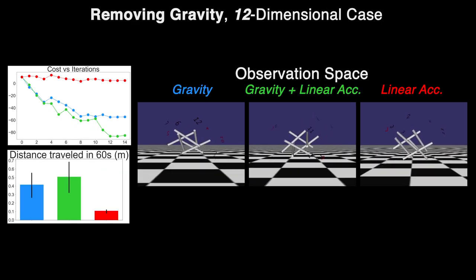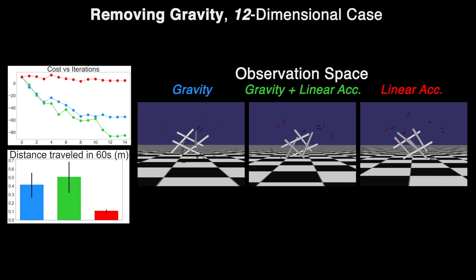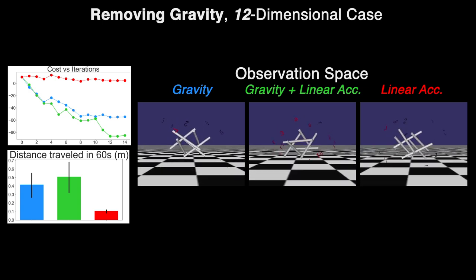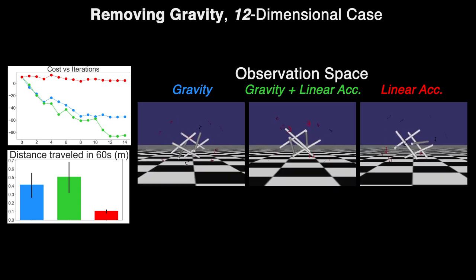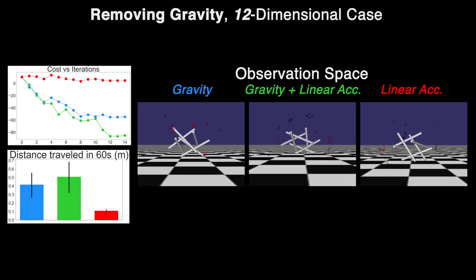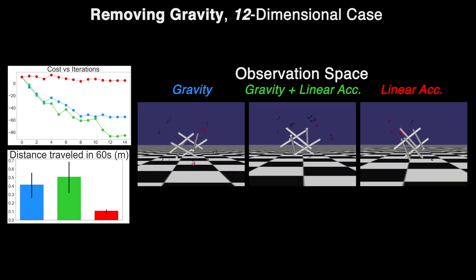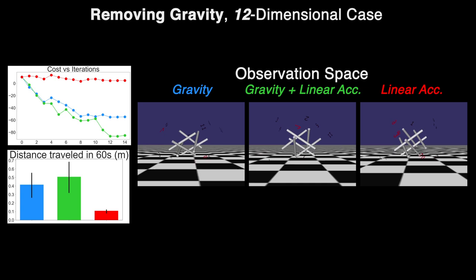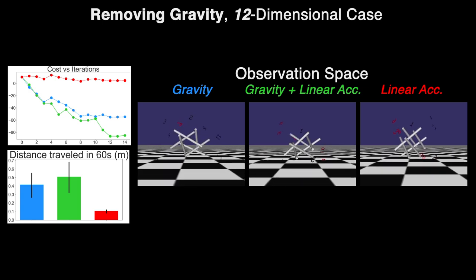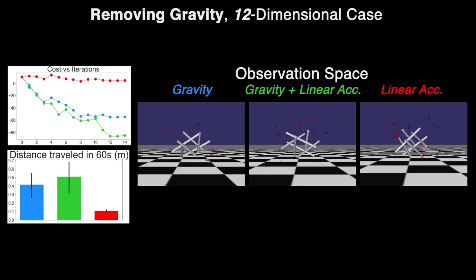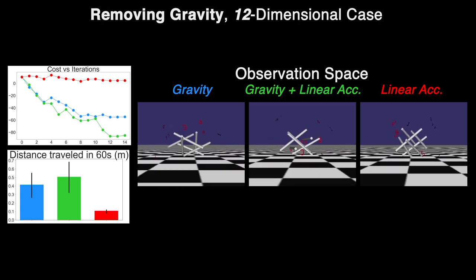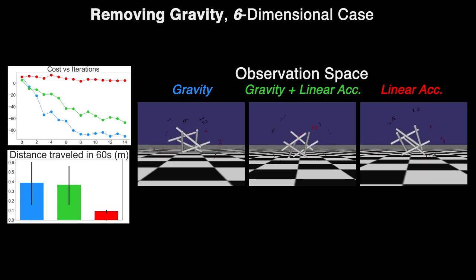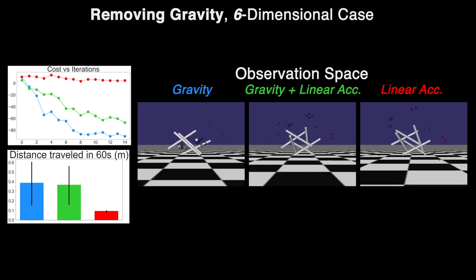In investigating this, we found that while the robot still performed nearly as well when trained with purely gravitational acceleration data, the policy's success plummeted when given linear acceleration data without any knowledge of gravity. This hypothesis was also tested on 6 and 3 dimensional data with similar results.